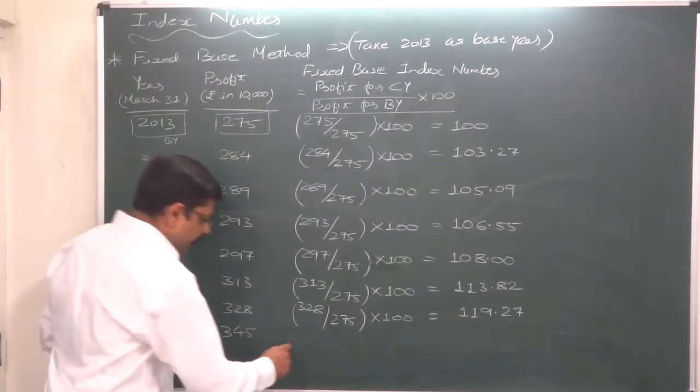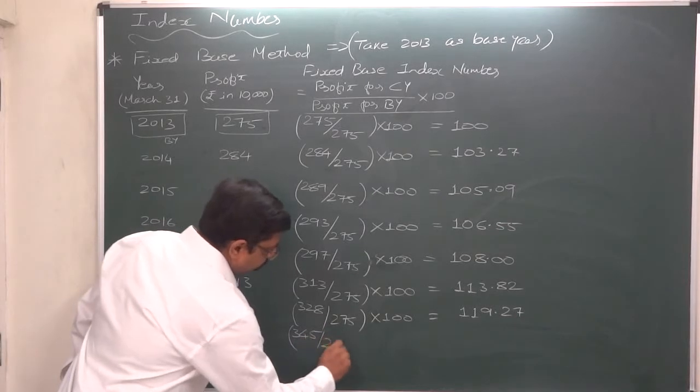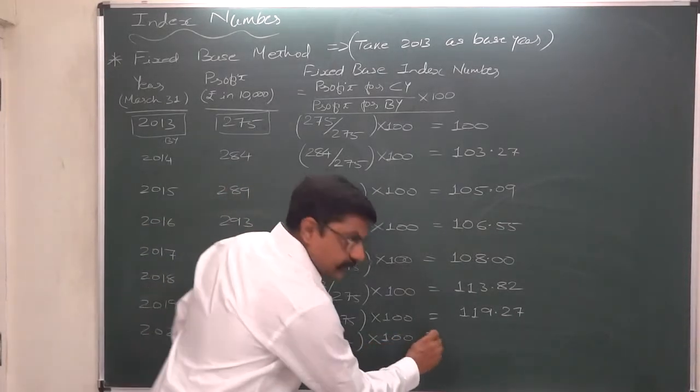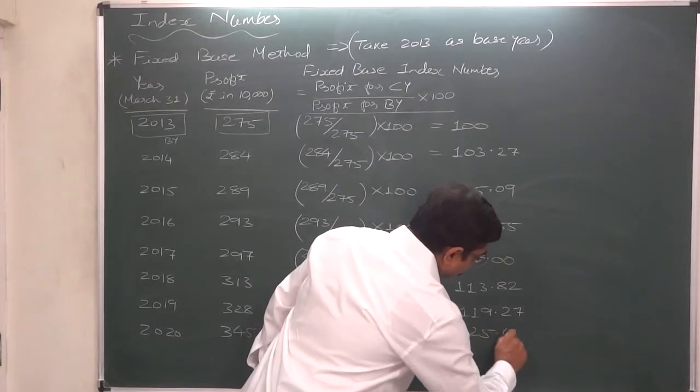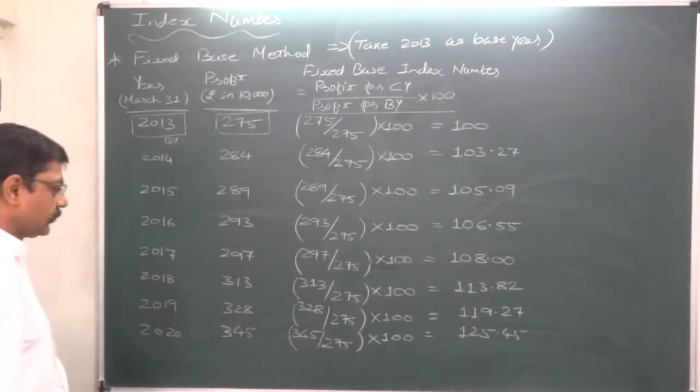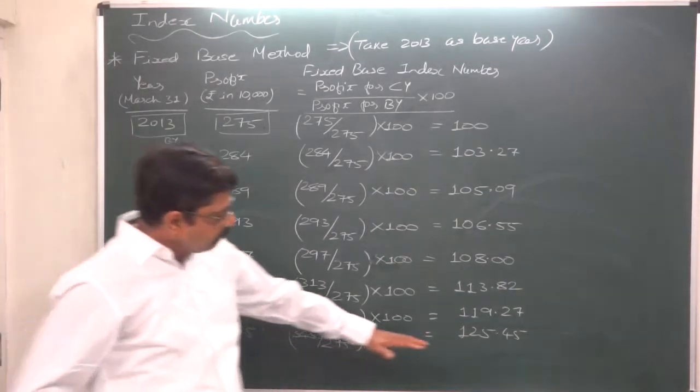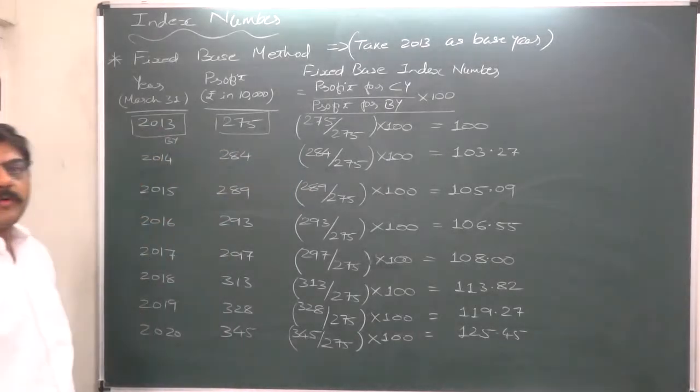And for the last year of our data, 2020, it is 345 divided by 275 into 100. It comes to 125.45. So in the year 2020, the profit increased by 25.45% as compared to profit made in 2013.